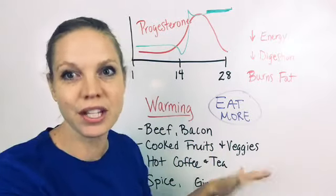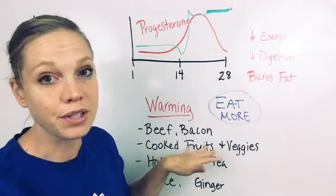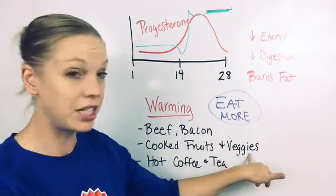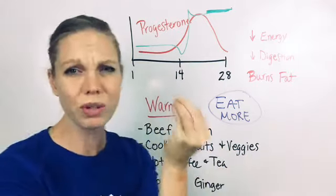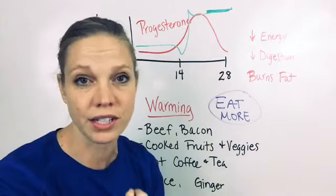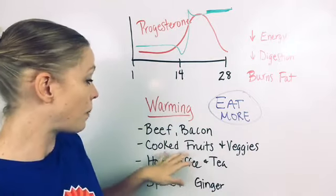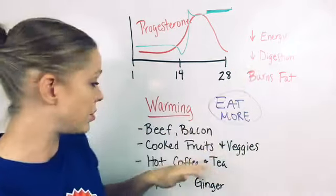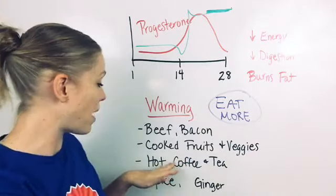cooked fruits and vegetables. Really breaking down the fibrous component of some of these fruits and veggies, especially some veggies that are really fibrous and can be hard for your digestive system to break apart. So by cooking that it's easier to break down, but it's also a warming component to your body.